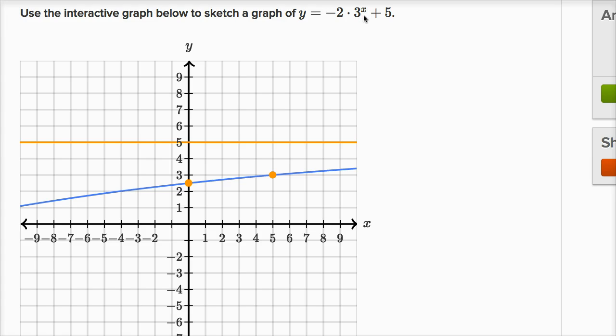If x equals zero, three to the zeroth power is one, negative two times one is negative two, plus five is three. So when x equals zero, y is three.